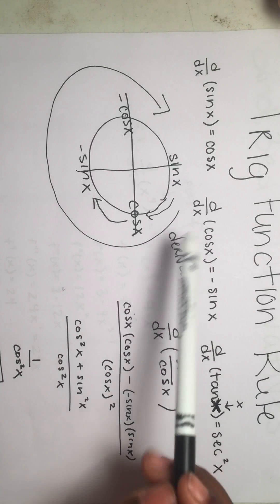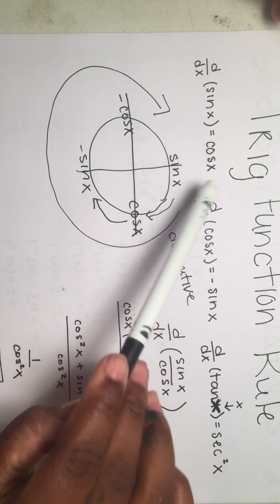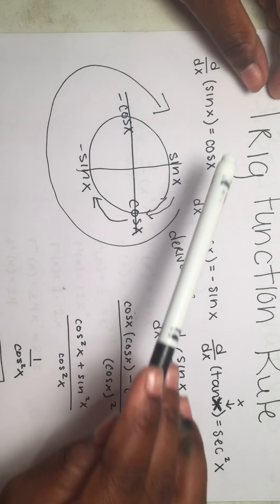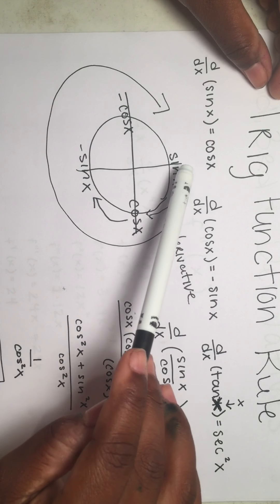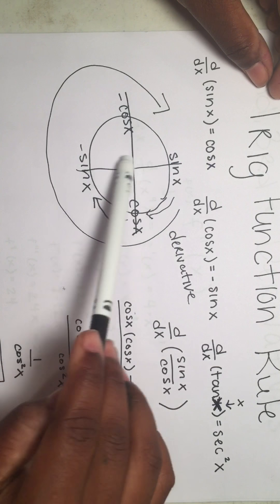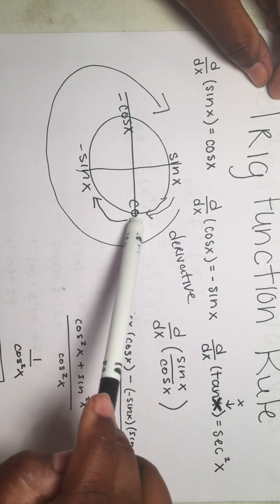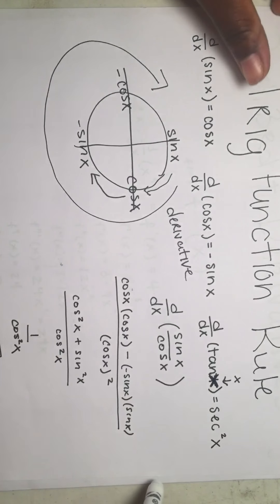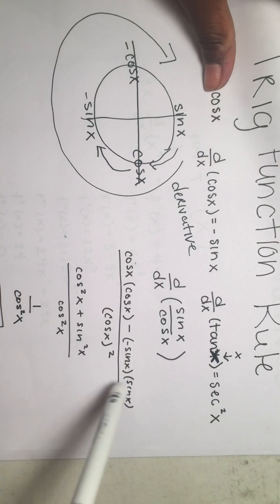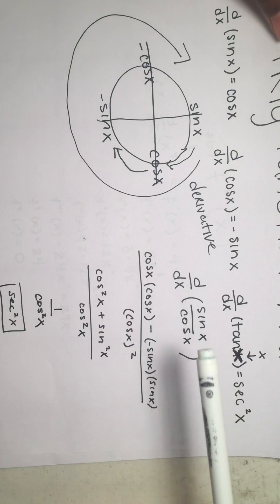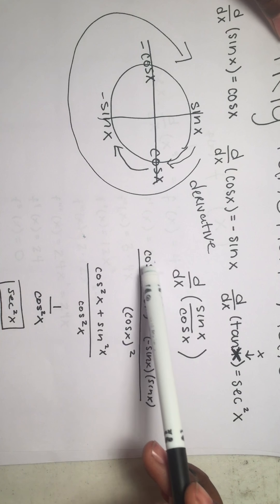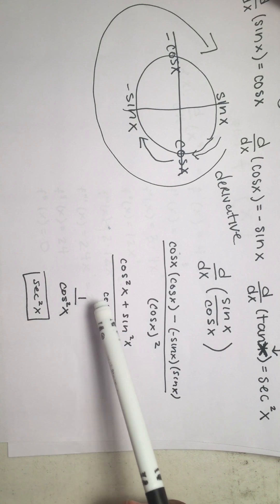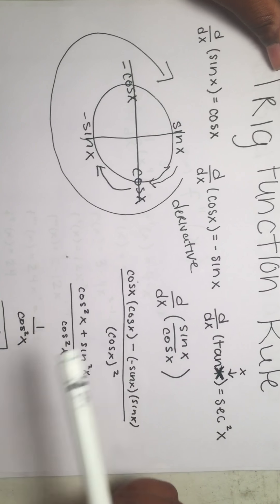The trig function rules are always the same. The derivative of sine x is cosine x, the derivative of cosine x is negative sine x, and the derivative of tangent x is secant x squared. We can use a unit circle to find the first two: starting with the given function and moving one step clockwise gives the derivative. For tangent, we convert it to sine x over cosine x and apply the quotient rule, using trig identities to ultimately prove that the derivative is secant x squared.